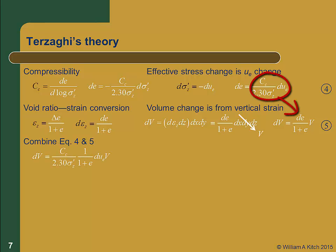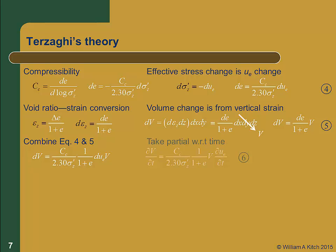Now we substitute equation 4 into equation 5, and we'll have dv equal to c sub c over 2.3 times sigma prime z times 1 over 1 plus e times du sub e times v. Taking the partial of this with respect to time gives us the sixth equation.